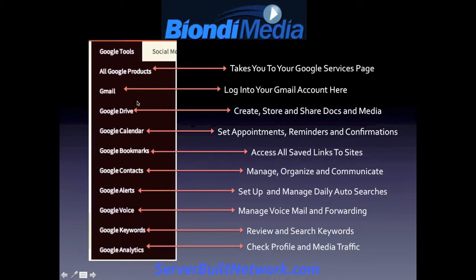Every drop-down as you run the cursor, you'll see all the different things. For instance, under Google tools, we have a link to all the Google products: Gmail, Google Drive, the calendar, bookmarks, contacts, Google Alerts, Google Voice, and then keywords and analytics.